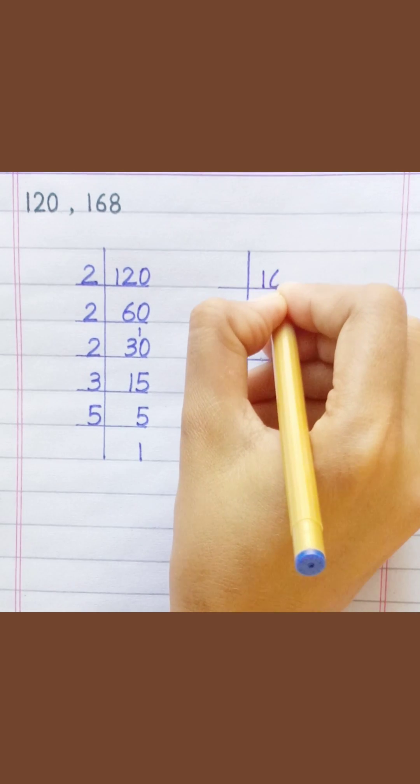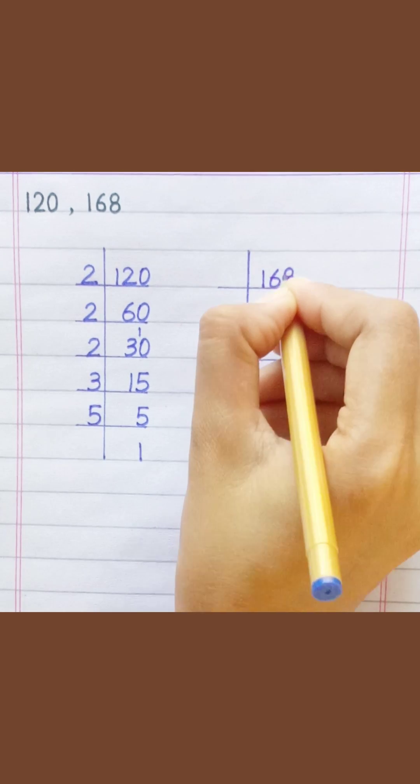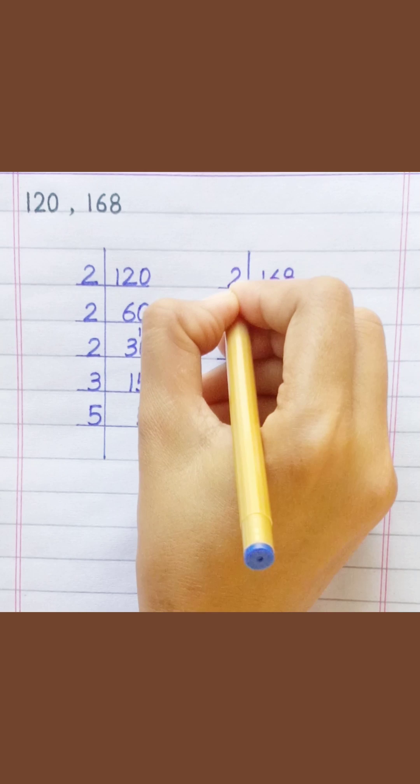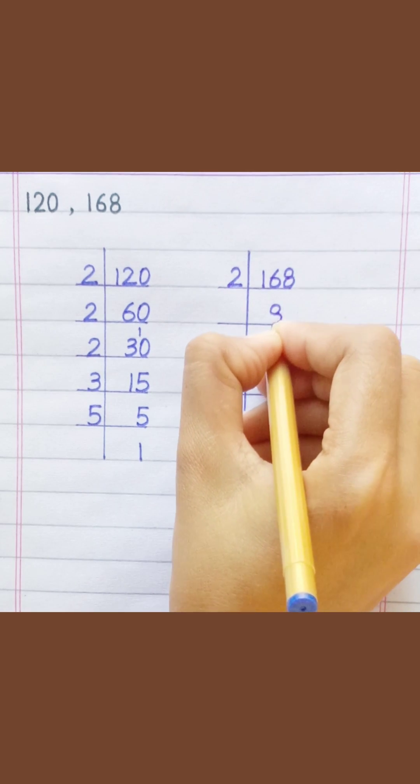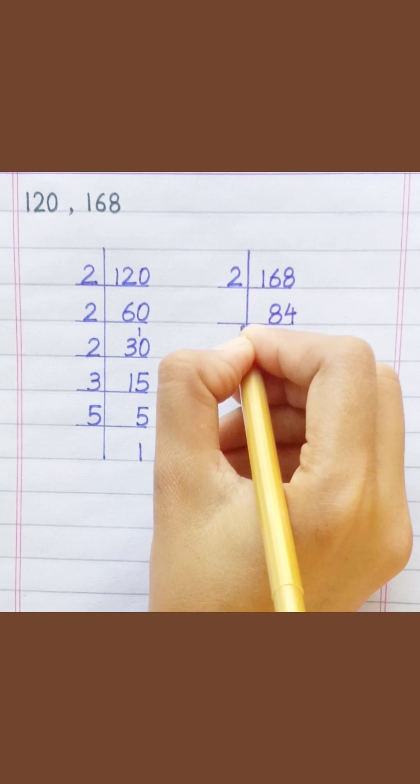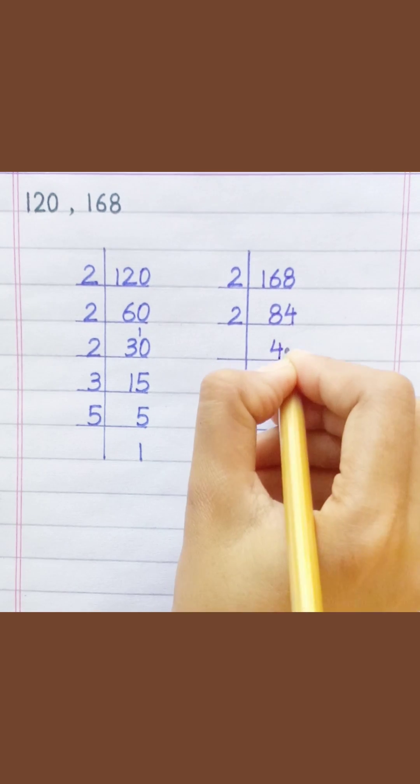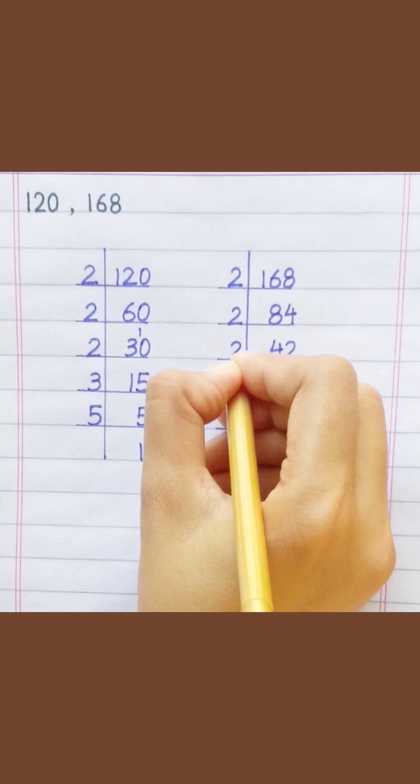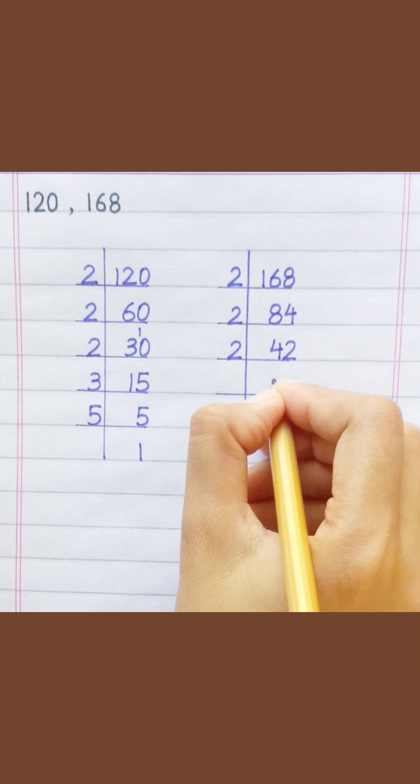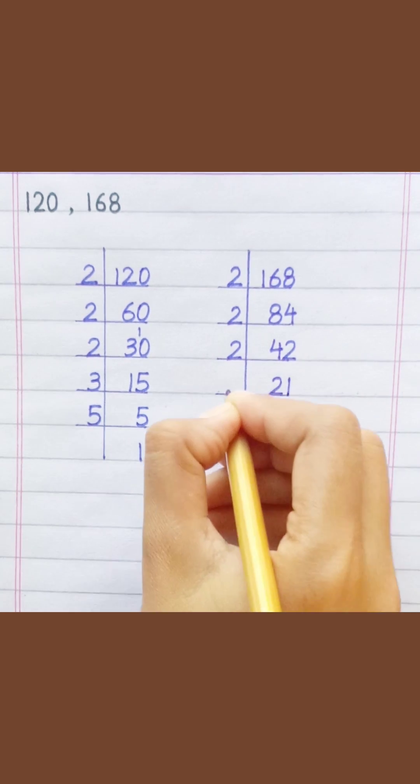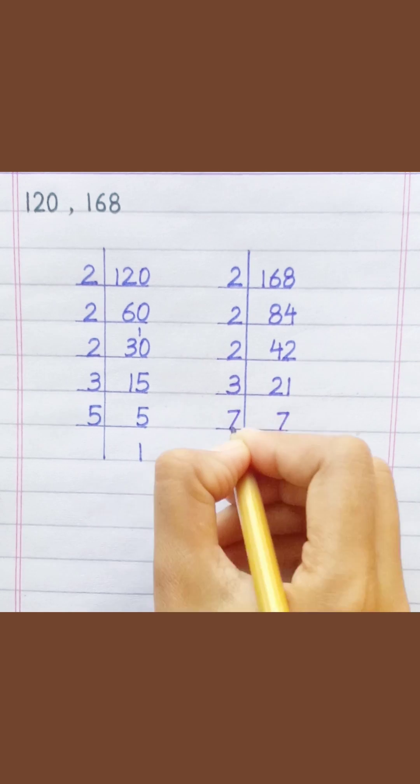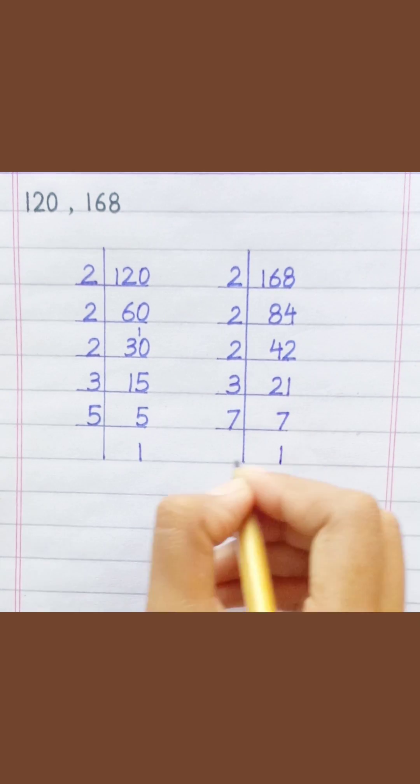One hundred sixty-eight. Two eights are sixteen, two fours are eight, two twos are four, two twos are four, two ones are two, three sevens are twenty-one, seven ones are seven.